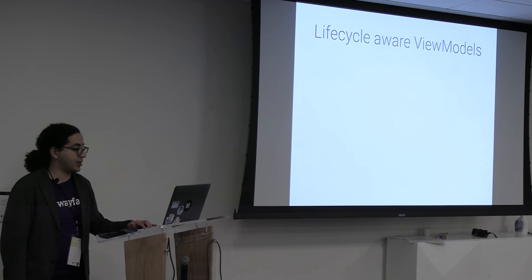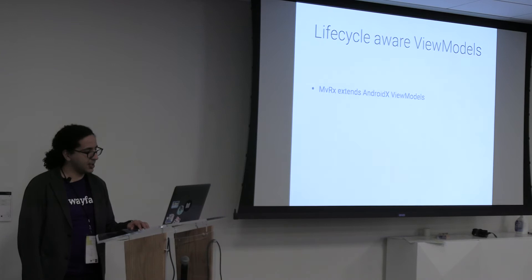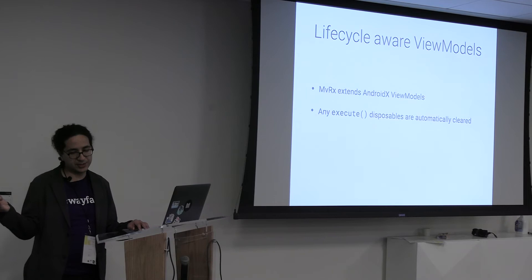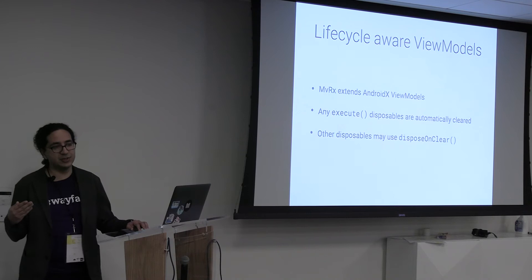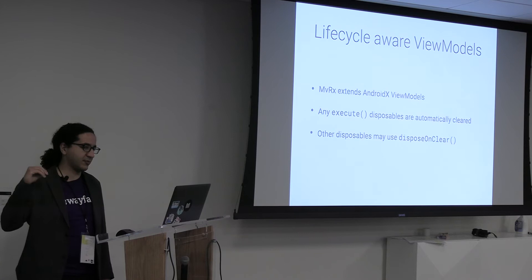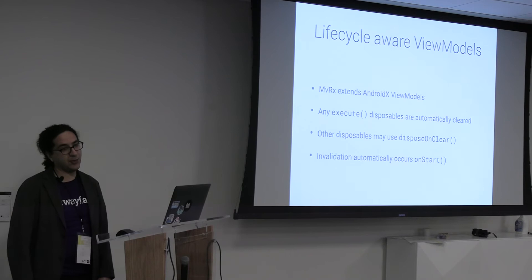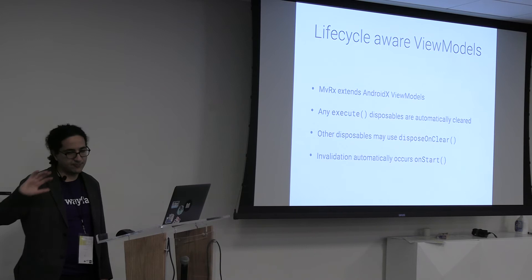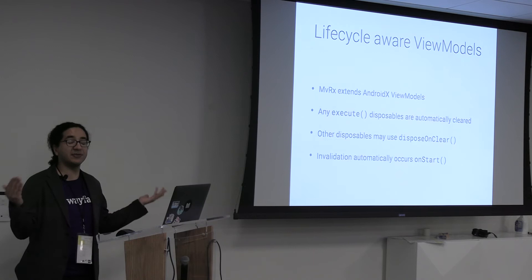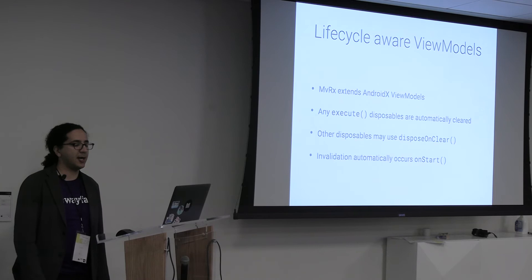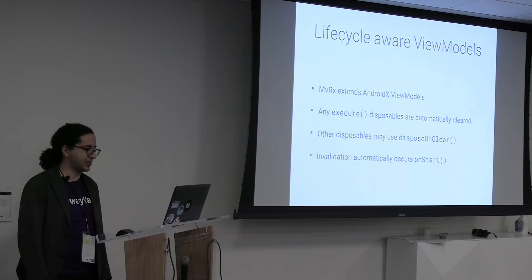The Mavericks view models are lifecycle-aware and extend AndroidX ViewModel. You get automatically cleared disposables when you use execute — we talked about that. Any disposables you create manually with a direct subscribe call can be tied into the same behavior by adding disposeOnClear to that disposable. It will also make sure that every time your fragment gets to onStart, an invalidation happens — which is important for catching any of the more esoteric lifecycle events like going into multi-window mode. If you're not making sure that stuff happens, those types of things can catch you off guard.